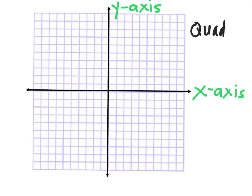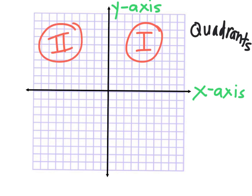The quadrants start in the upper right-hand corner — this is called quadrant one, written as Roman numeral I. Then you go counterclockwise: this is quadrant two, this is quadrant three, and quadrant four. Again, these are Roman numerals, so when you see those, that's what they mean. Those are the four quadrants, or the four sections of the graph.